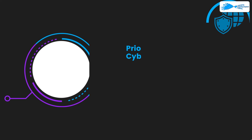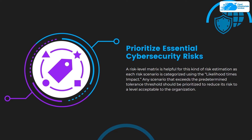At step number seven you need to prioritize essential cyber security risk. You need to prioritize the likelihood of risk and tackle the risks that are most probable to occur in the future. A risk level matrix is helpful for this kind of risk estimation, as each risk scenario is categorized under likelihood times impact. Any scenario that exceeds a predetermined tolerance threshold should be prioritized so that you can reduce its risk to a level acceptable to the organization.